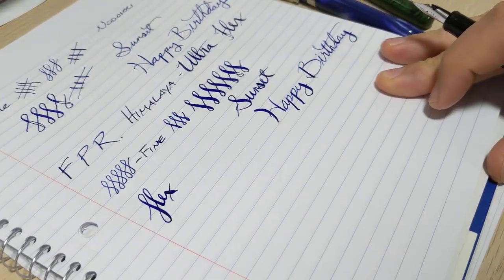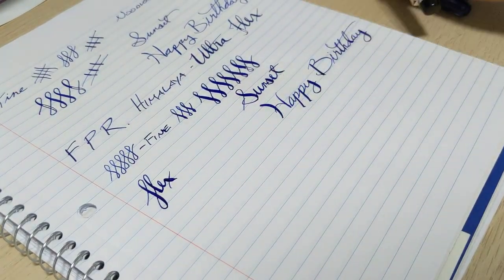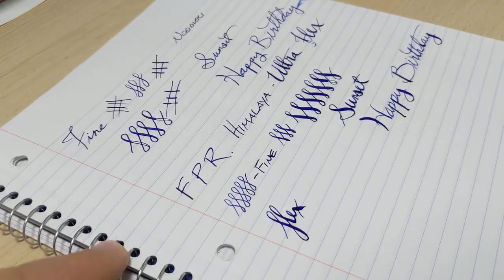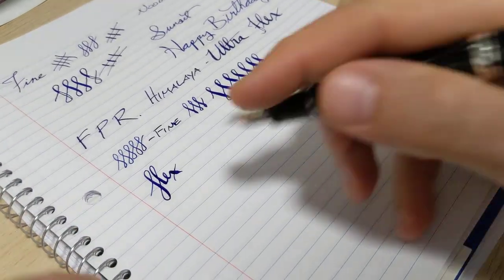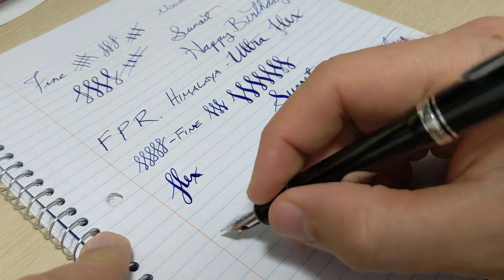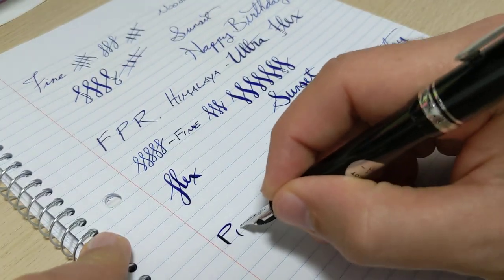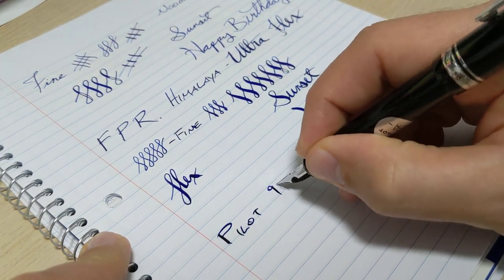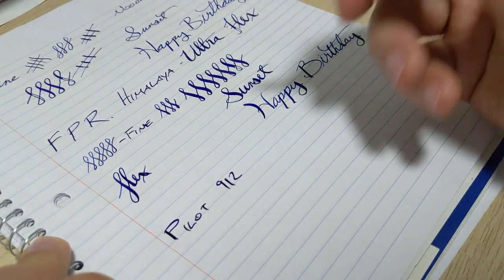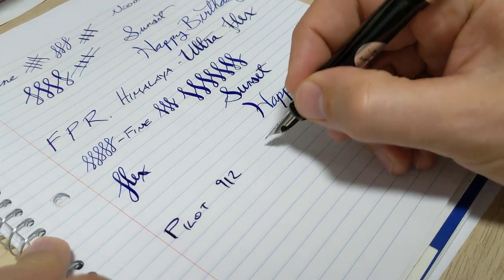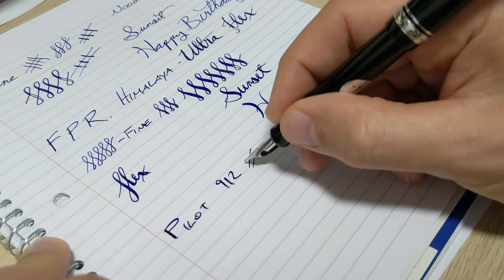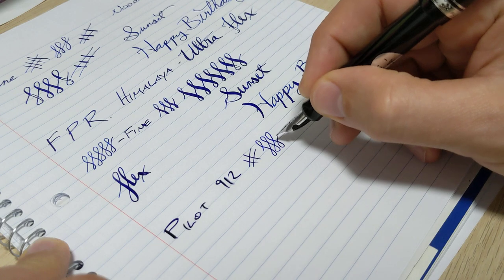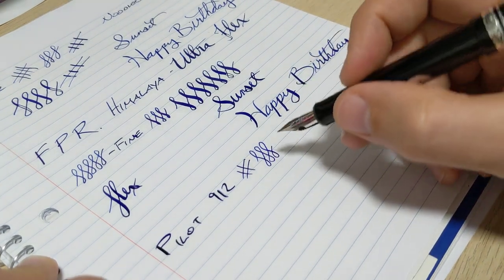And lastly we got, again all same ink, this is the Pilot Custom Heritage 912 with the FA nib. I never know what angle to put the camera when I do these videos. Anyway so this is the Pilot 912 and you can already see like that's barely pressure. Here's the absolute super featherweight and even the little spots it's already getting a little bit wider. So this one is definitely, they say this is as close as a modern day pen gets to the vintage flex. Just even mild pressure you start to get line variation.